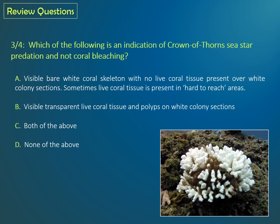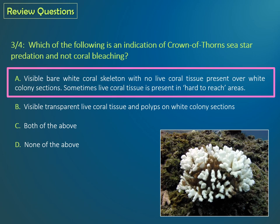Question three: Which of the following is an indication of Crown of Thorns Seastar predation and not coral bleaching? A: a visible bare white coral skeleton with no live coral tissue present over the white colony sections — sometimes live coral tissue is present in hard to reach areas. B: visible transparent live coral tissue and polyps on white colony sections. C: both of the above. D: none of the above. If you said A, you're correct.